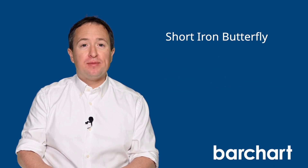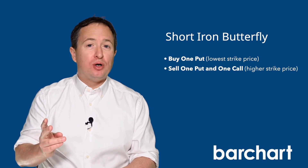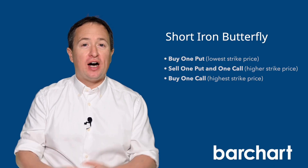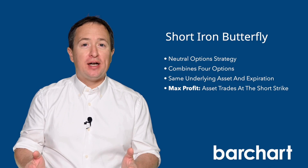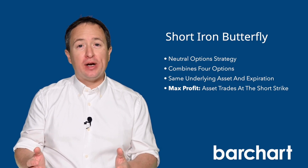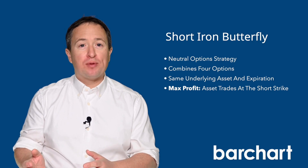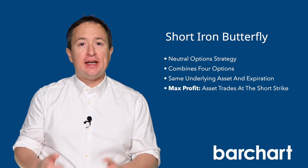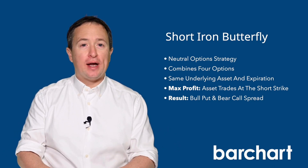To set up the trade, you'll buy one put option, then sell a put and a call at a higher strike, and then buy one call at an even higher strike. All options will have the same underlying asset and expiration date, with the distance between the outer and middle strike prices equal on both sides. The result is a bull put and a bear call resulting in a net credit.